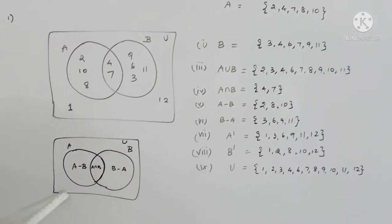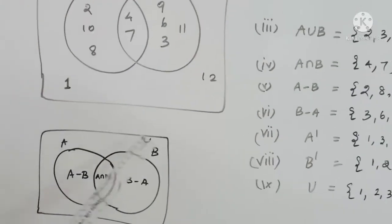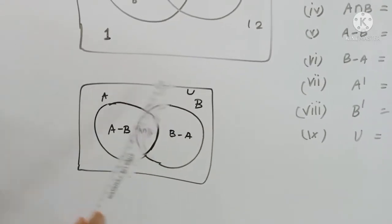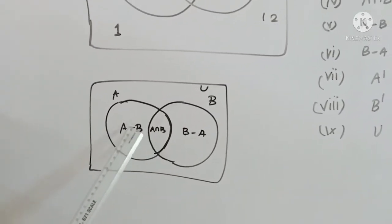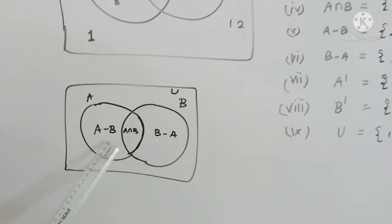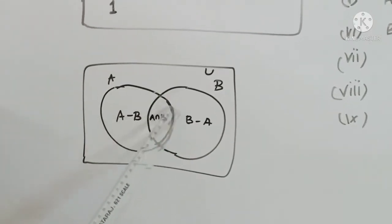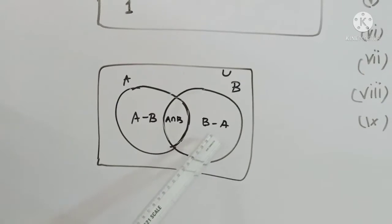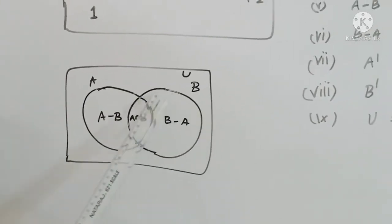First, we will clarify the Venn diagram. In the Venn diagram, we have the whole box as the universal set. A and B are inside it. This part is A minus B. This part is A and B — A intersection B. This part is B minus A, the area of B not in A.